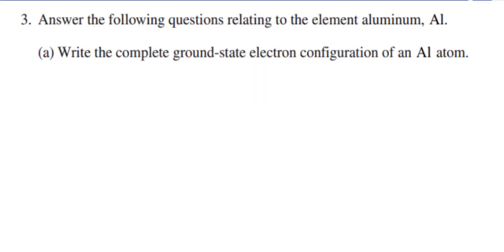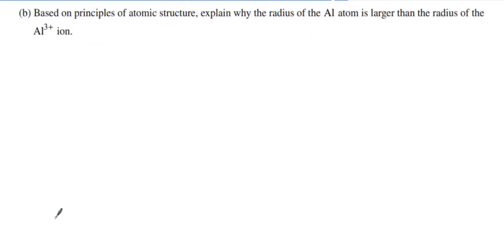The first question starts with the basic electron configuration of the ground state of aluminum. Look on your periodic table: we got 1s2, 2s2, 2p6, 3s2, and 3p1. That is the ground state electron configuration of aluminum.